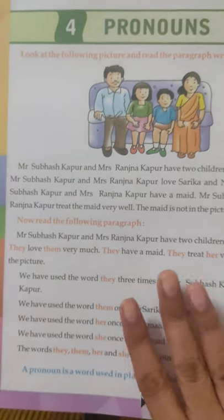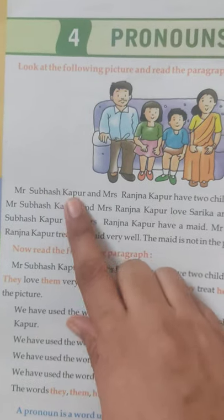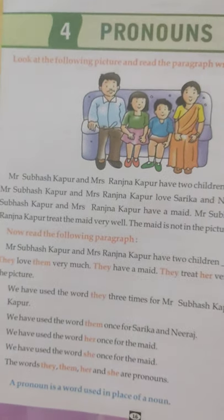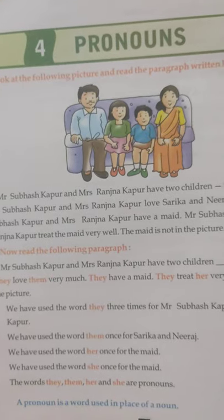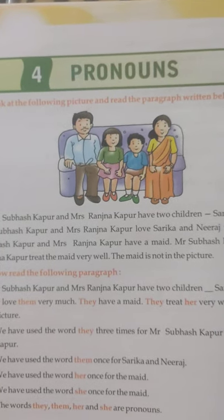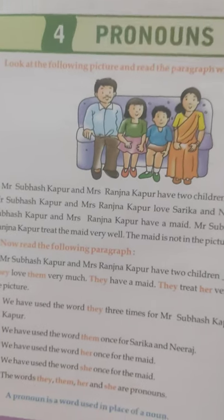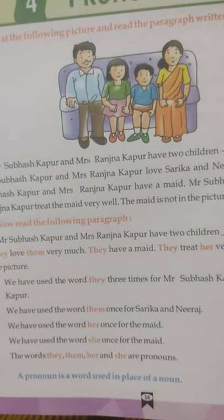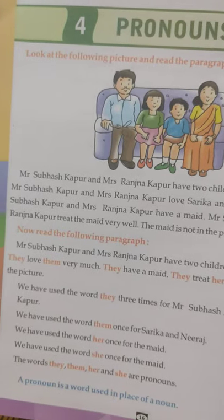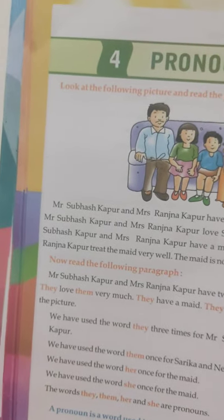For example, the paragraph we studied was about Mr. Subhash Kapoor and Mrs. Ranjana Kapoor. So instead of writing these big names again and again, we chose the word 'they'. If we are talking about two persons, we use the word 'they'. If we talk about any particular female or male, then we use the word 'she' or 'he'.